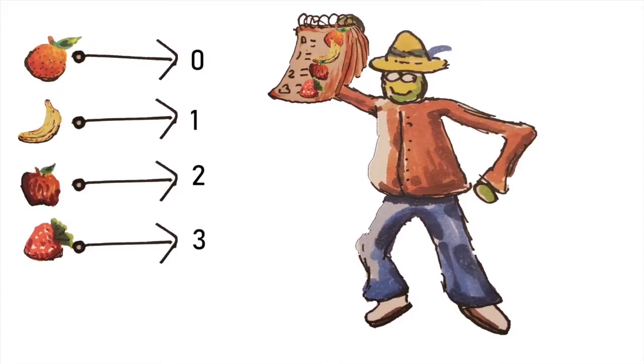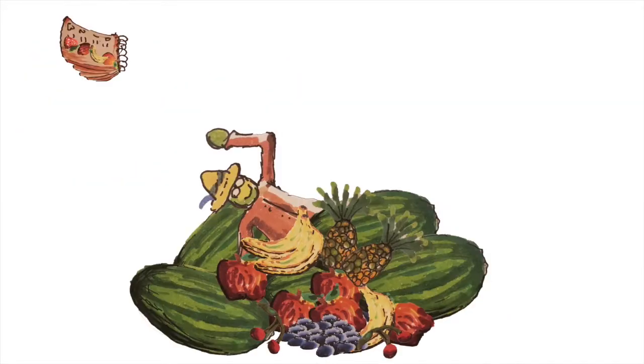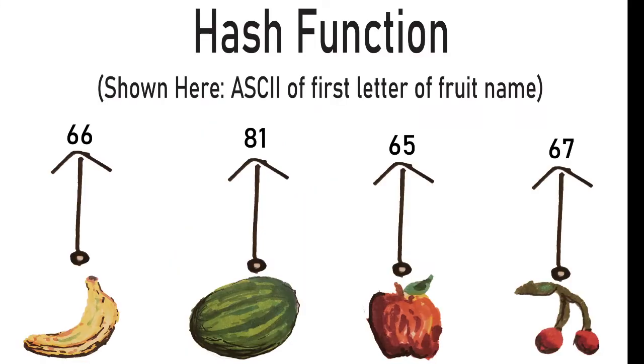If you only have 4 fruits, you might just decide to memorize your mapping and use that. But you're a very popular fruit vendor and you're always getting new fruit, so that doesn't work. We still have some more tricks though. Instead of creating an arbitrary mapping, we'll create a hash function to help us turn a fruit into an index.